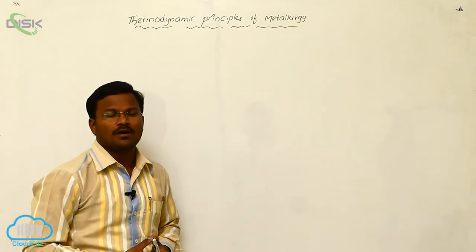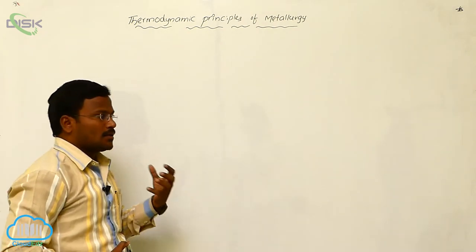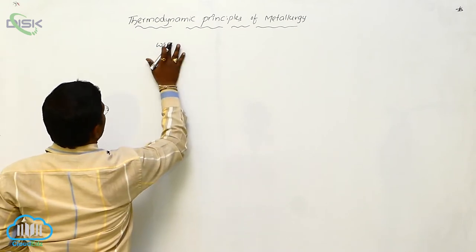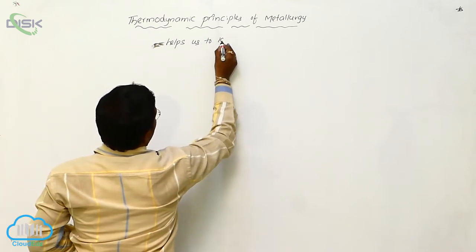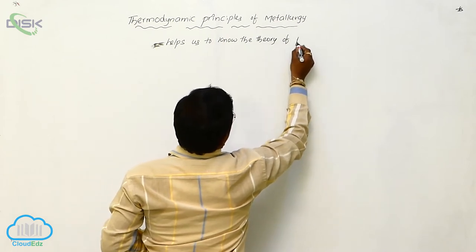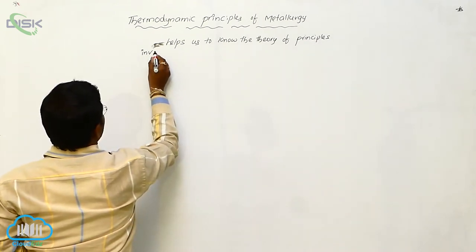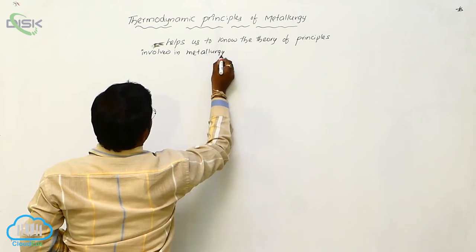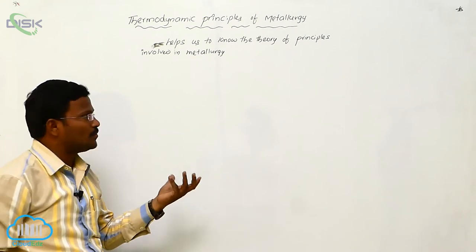The next topic from principles of metallurgy is thermodynamic principles of metallurgy. The basic laws and concepts of thermodynamics help us to know the theory involved in metallurgical principles.